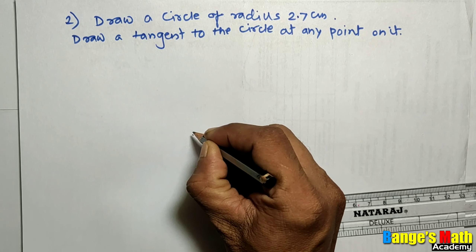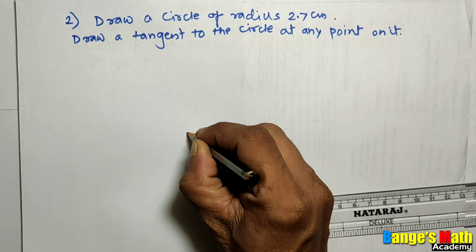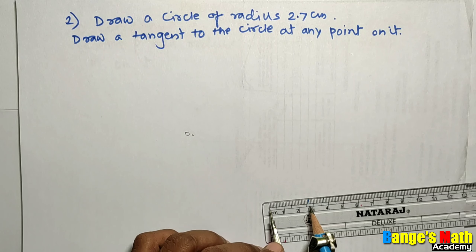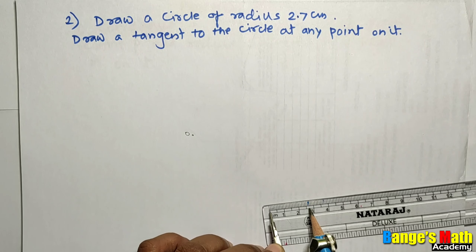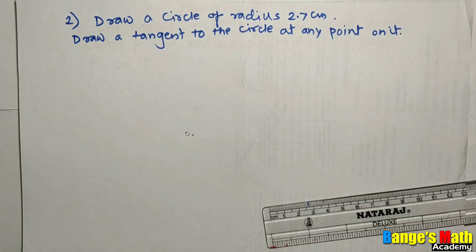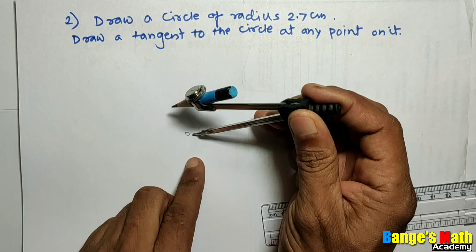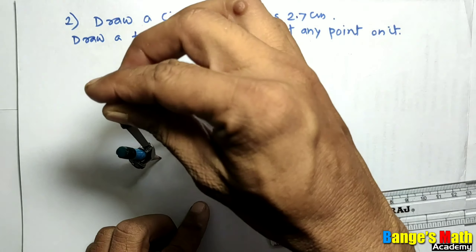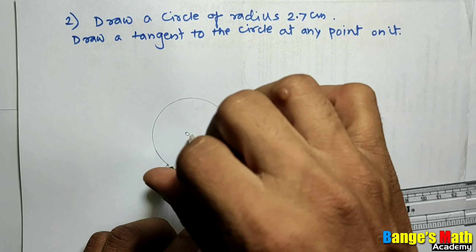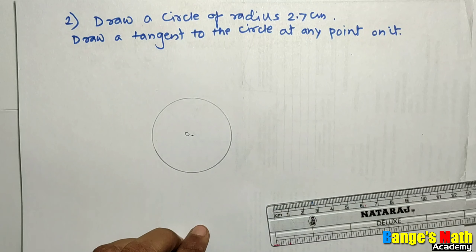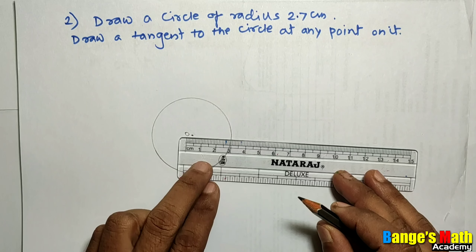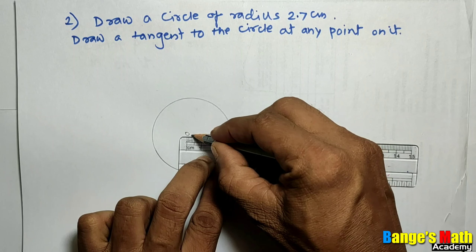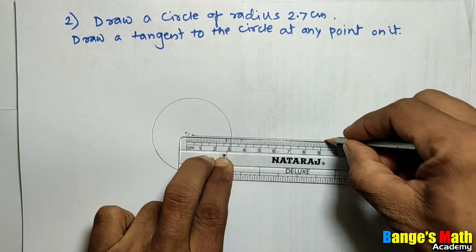Take the center of the circle as O and take distance 2.7 cm in your compass. Put the still point of compass on point O and draw a circle with radius 2.7 cm. Then draw the radius and extend it to the right side.